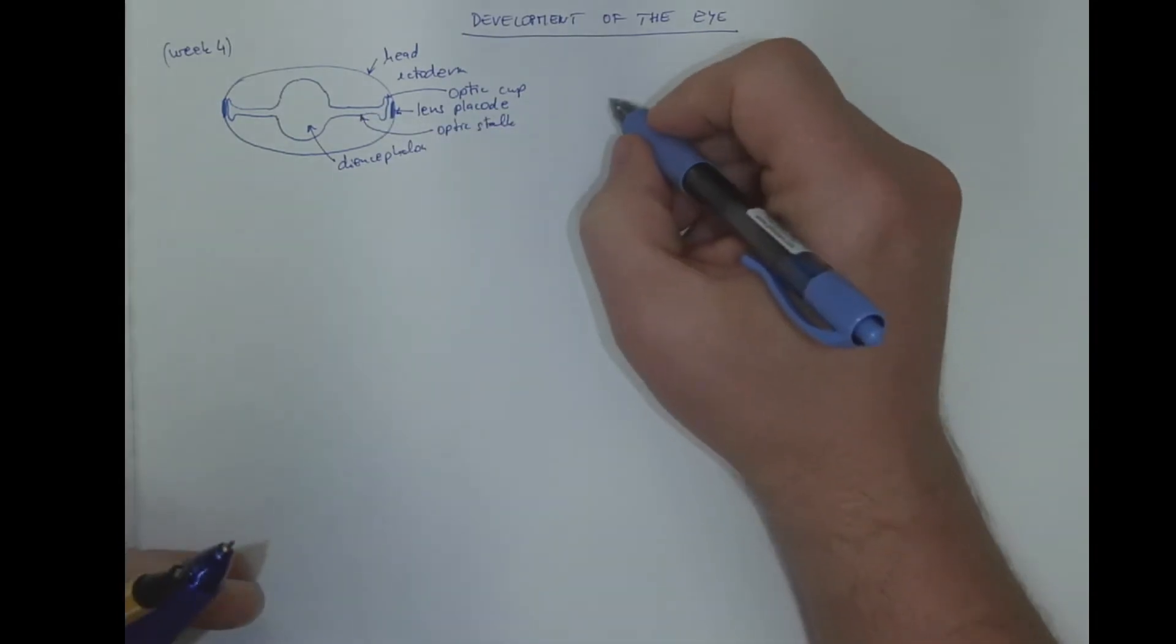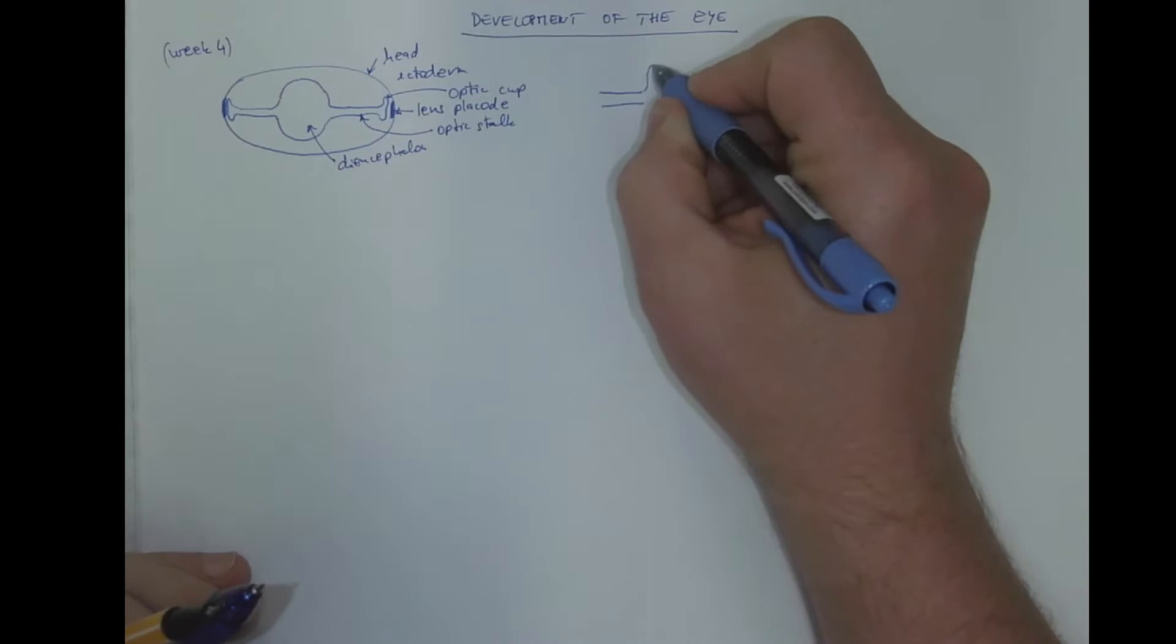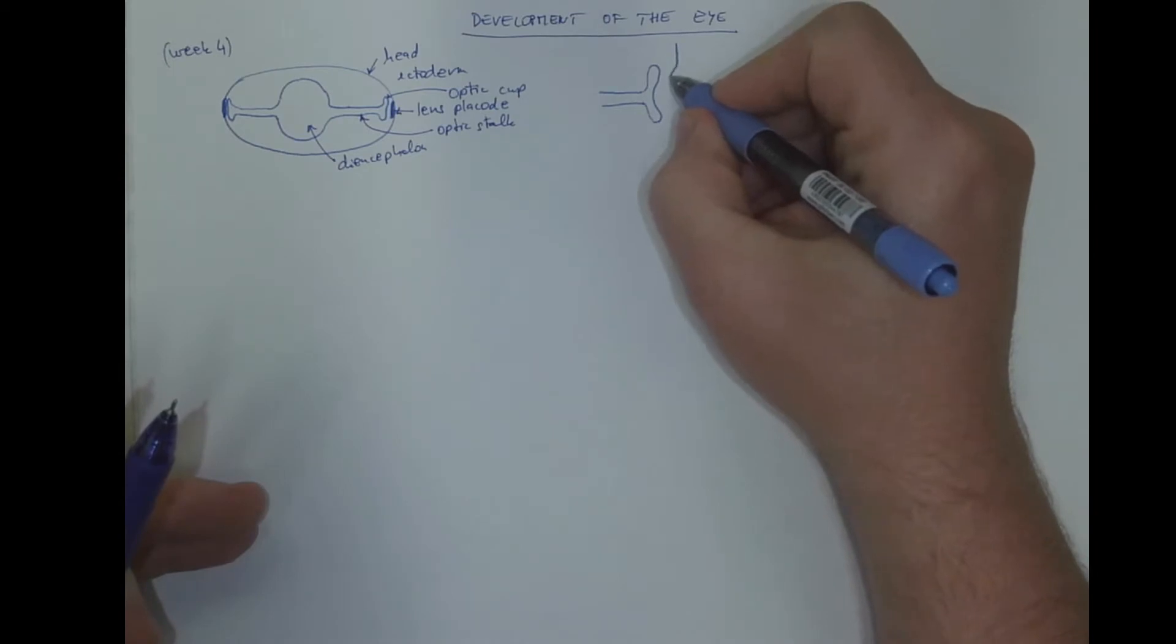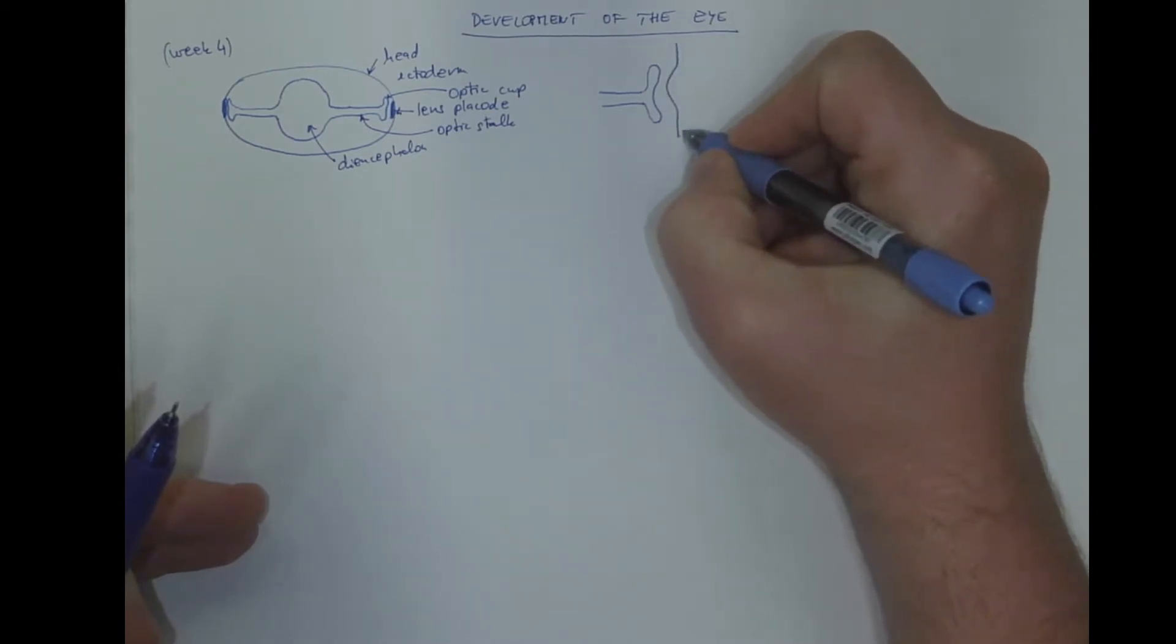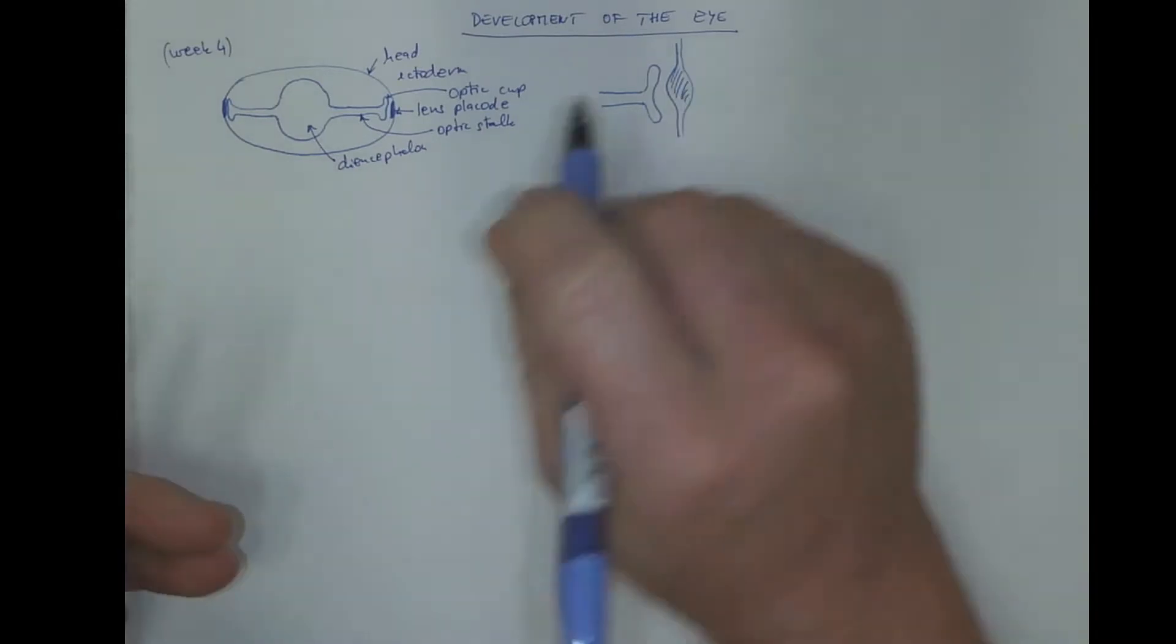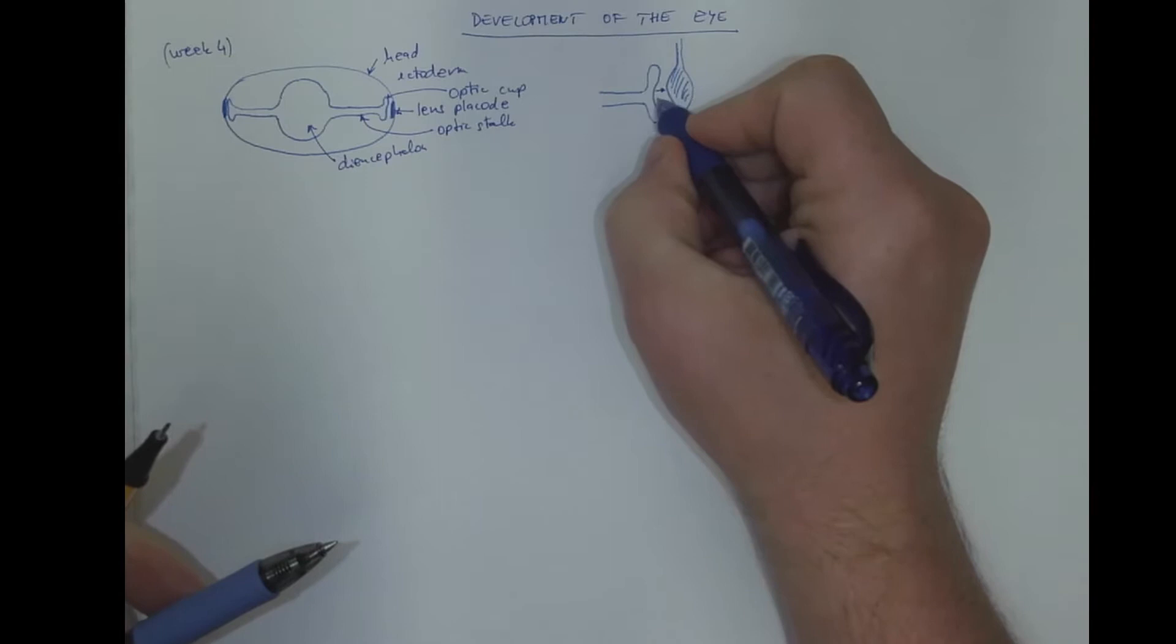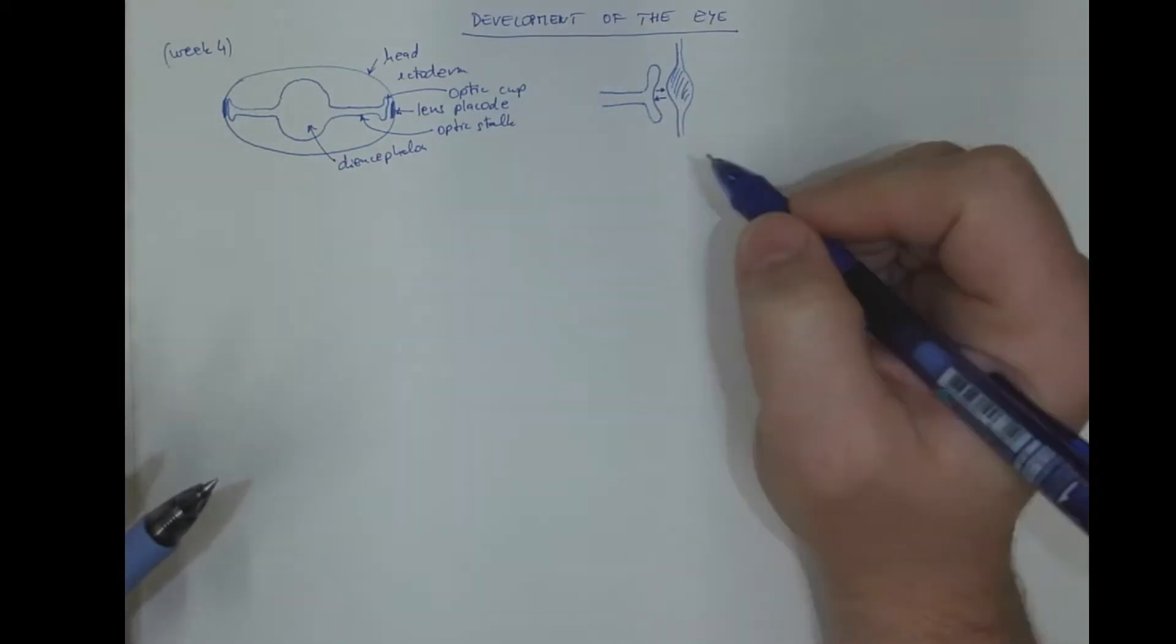In more detail, the lens placode interacts with surface ectoderm, which proliferates to form the placode. It's a typical example of induction. There is an interchange, interplay of various signal molecules.